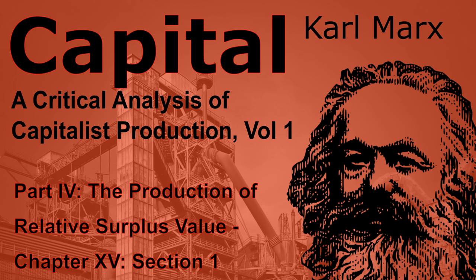Here we have the machine, but only as an elementary factor of production by machinery. Increase in the size of the machine and in the number of its working tools calls for a more massive mechanism to drive it, and this mechanism requires, in order to overcome its resistance, a mightier moving power than that of man, apart from the fact that man is a very imperfect instrument for producing uniform continued motion. Of all the great motors handed down from the manufacturing period, horsepower is the worst, partly because a horse has a head of his own, partly because he is costly, and the extent to which he is applicable in factories is very restricted.